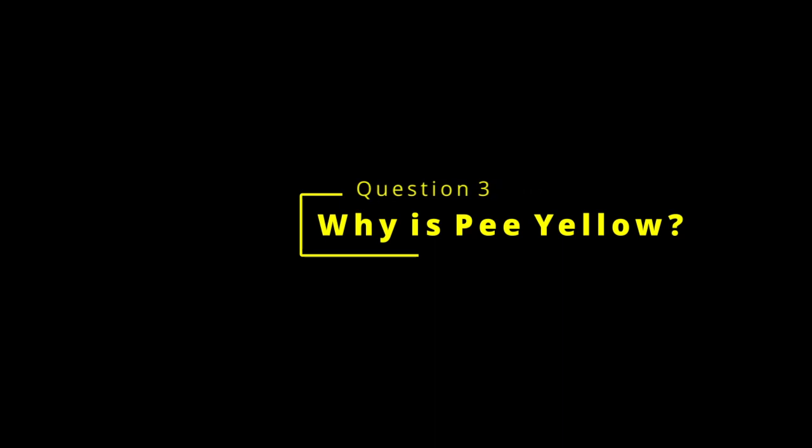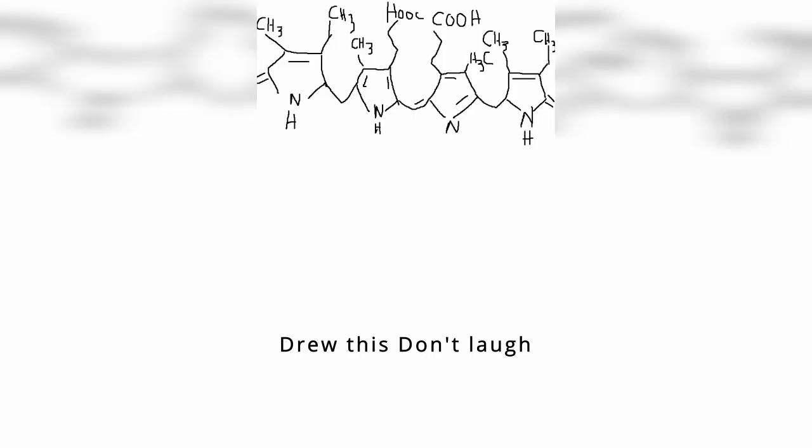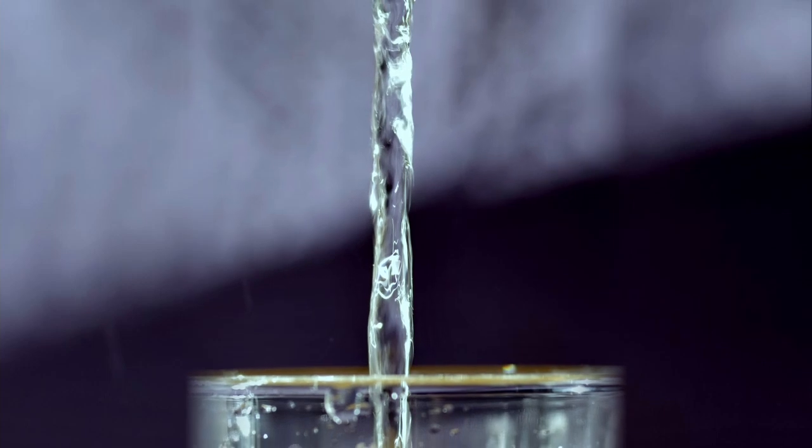Next, why is pee yellow? Well, the yellowness in pee is caused by a pigment called urochrome. And urochrome changes the color of pee based on the amount of water that a person drinks.